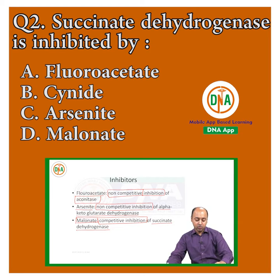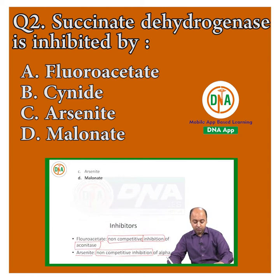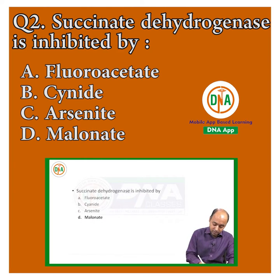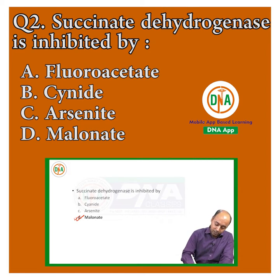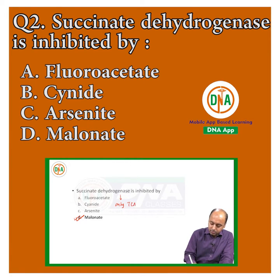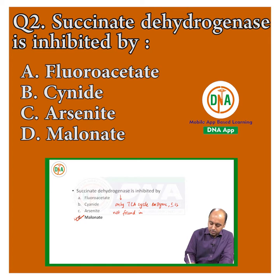These are the different types of inhibitors acting on the Krebs cycle. For the given question, the answer is definitely malonate — succinate dehydrogenase is inhibited by malonate. About succinate dehydrogenase, please remember one important thing: it is the only TCA cycle enzyme which is not found in the mitochondrial matrix.